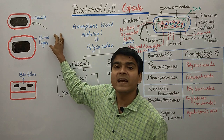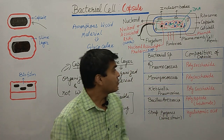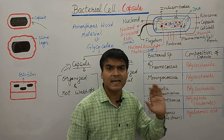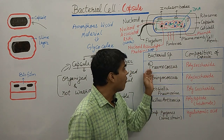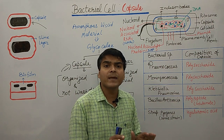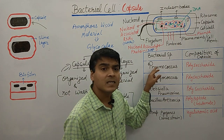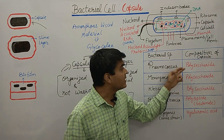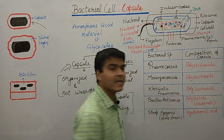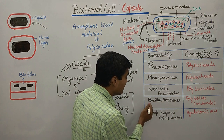Now, looking at the capsular composition. The capsule is generally made up of polysaccharide in most bacteria. For example: Pneumococcus capsule is made up of polysaccharide, Meningococcus capsule is made up of polysaccharide, and Klebsiella pneumoniae capsule is also made up of polysaccharide.